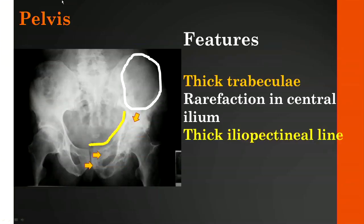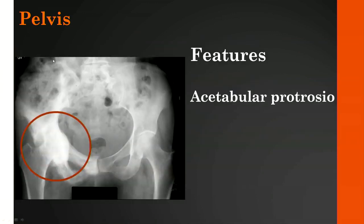In the pelvis, the features are also characteristic. There's rarefaction in the central ileum typically, and through the mixed and blastic phases we see thickening of the trabecular pattern, thickening of the ileopectineal line, and enlargement of the hemipelvis compared to the opposite side. Due to the excessive bone remodeling, you can also have protrusioacetabulum, seen here compared to the left side.